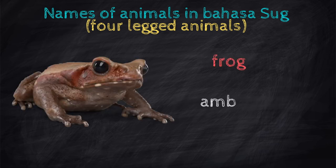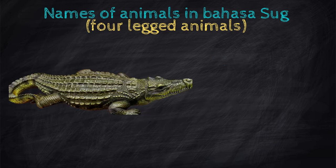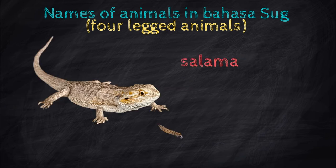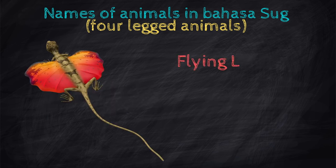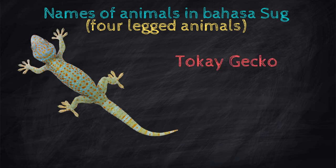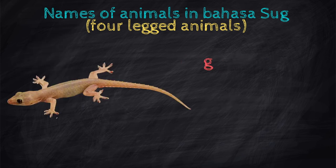Frog — Ambak. Crocodile — Buaya. Salamander — Tawil. Flying lizard — Buka-buka. Tokay gecko — Toki. Gecko — Pinit.